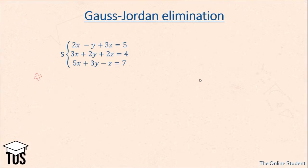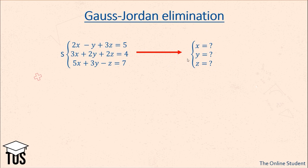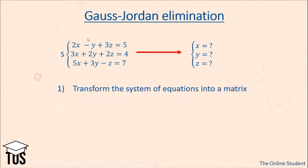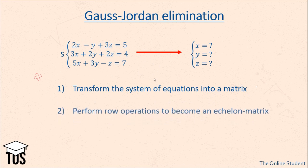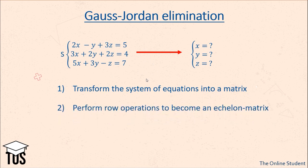Let's say we have a system of equations and we want to find x, y, and z. The Gauss-Jordan elimination method can be used to find these variables. Firstly, we transform the system of equations into a matrix. Secondly, we perform row operations on this matrix to become the echelon matrix, or row canonical matrix, and lastly we solve it.